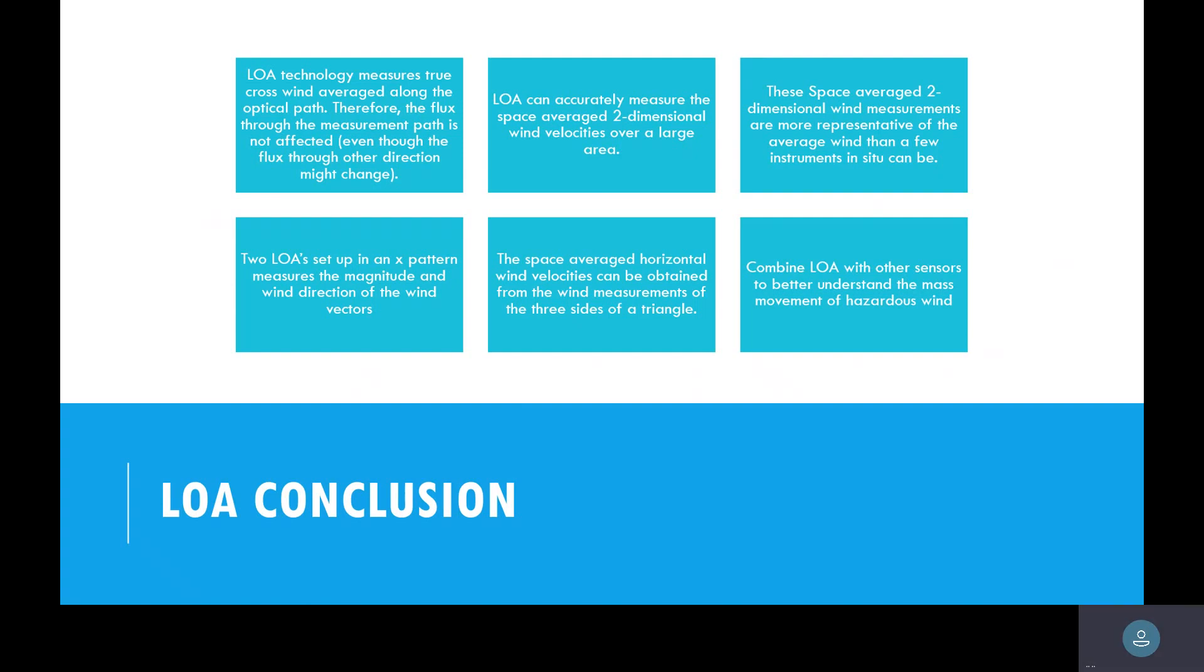LOA technology measures the true crosswind average across the path, so the flux through that measurement path is not affected even though the flux through the other direction might change. We can accurately measure the spaced average two-dimensional wind velocities over that large area. These spaced average two-dimensional wind measurements are more representative than average wind than maybe a few instruments can be. If you do the X pattern, we can measure the magnitude of the wind direction and the wind vectors.